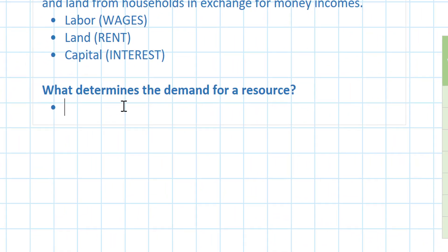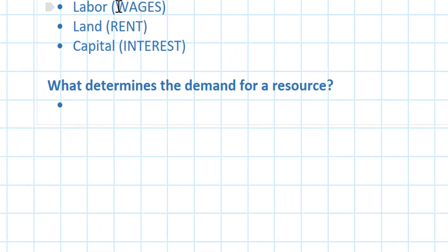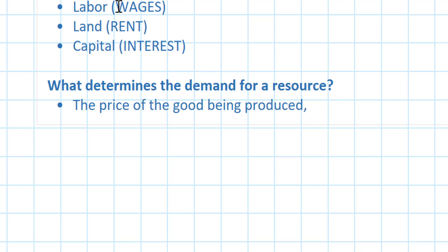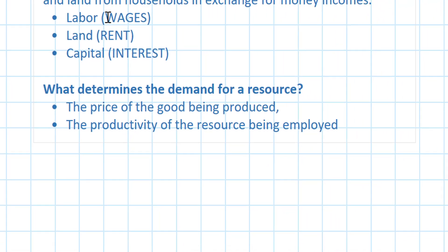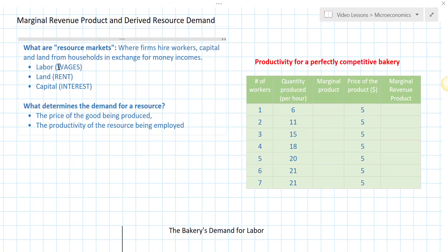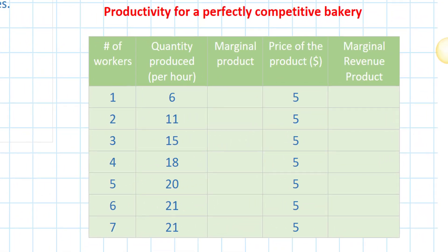So what determines a firm's demand for a resource? There are basically two things: one is the price of the good being produced, and the other is the productivity of the resource being employed. To illustrate this, we're going to look at the productivity table for an individual perfectly competitive bakery. A perfect competitor is what we call a price taker.